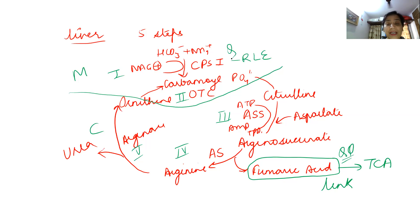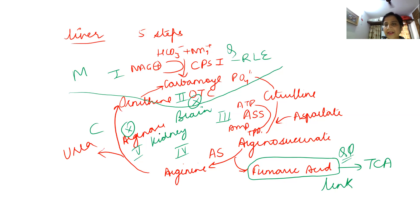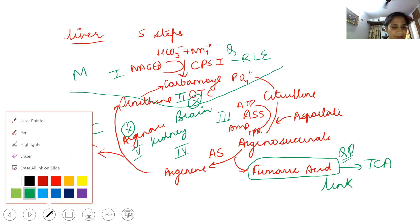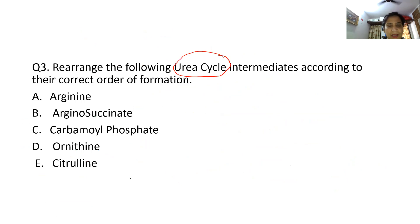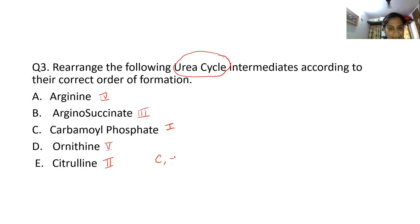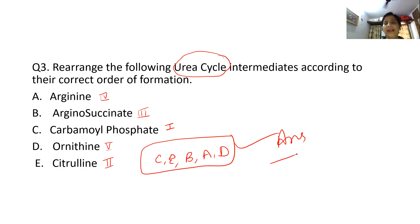The urea cycle cannot operate in the brain or kidney because both lack the necessary enzymes. For the sequence question, the correct order is: carbamoyl phosphate is produced first, then ornithine combines with it to form citrulline, citrulline forms argininosuccinate, which forms arginine, and finally ornithine is regenerated. Looking at the options, the correct answer sequence is C, E, B, A, D.